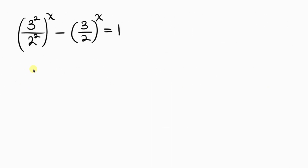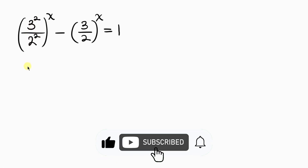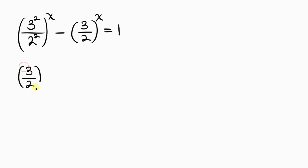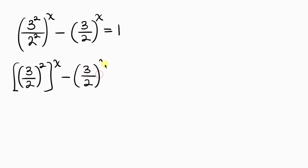Applying the law of indices for common powers, 3 squared over 2 squared raised to the x can be written as 3 over 2 all raised to the power 2, and we have another power of x, so this becomes 3 over 2 all raised to the power 2, then to the x, minus 3 over 2 all raised to the x, equals 1.